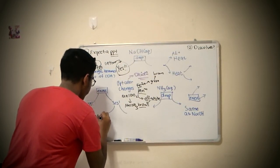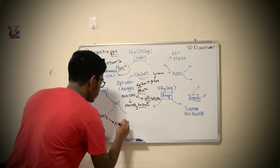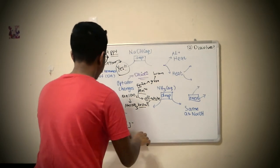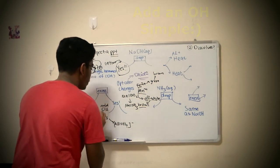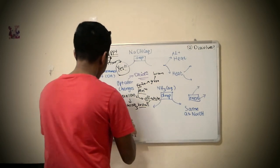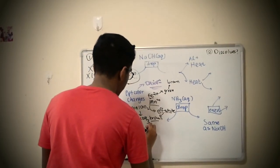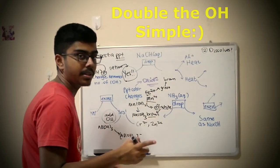Al(OH)3 becomes Al(OH)4 minus, the charge outside. Basically what happens here, you add an OH group. This is one way.